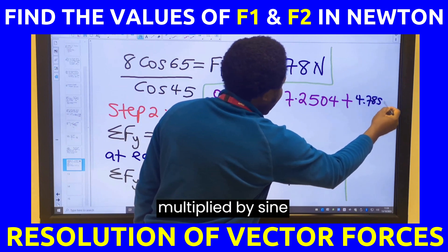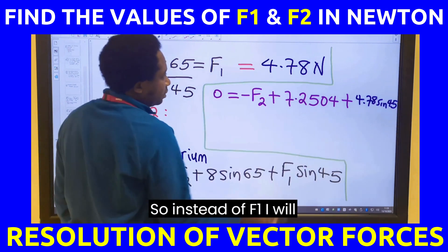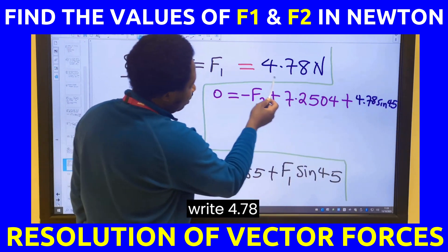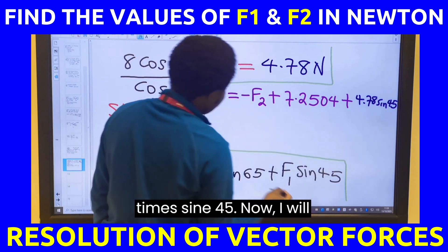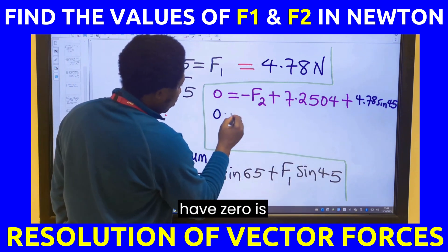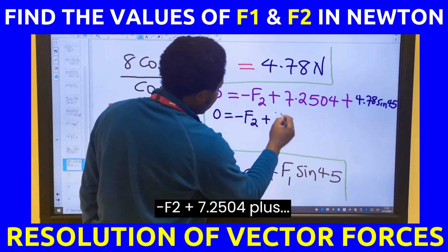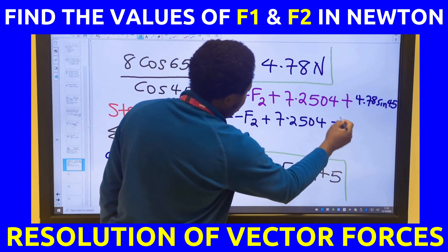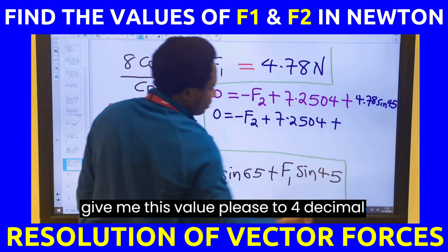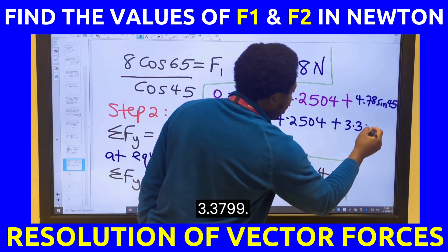multiplied by sine 45. So instead of F1, I will write 4.78 times sine 45. Now I will have 0 is minus F2 plus 7.250 plus, give me this value to 4 decimal places, 3.3799.